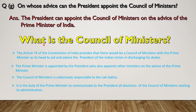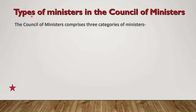Article 74 of the Constitution of India provides that there would be a council of ministers with the Prime Minister as its head to aid and advise the President of the Indian Union in discharging his duties. The Prime Minister is appointed by the President, who also appoints other ministers on the advice of the Prime Minister. The council of ministers is collectively responsible to the Lok Sabha. It is the duty of the Prime Minister to communicate to the President all decisions of the council of ministers relating to administration.